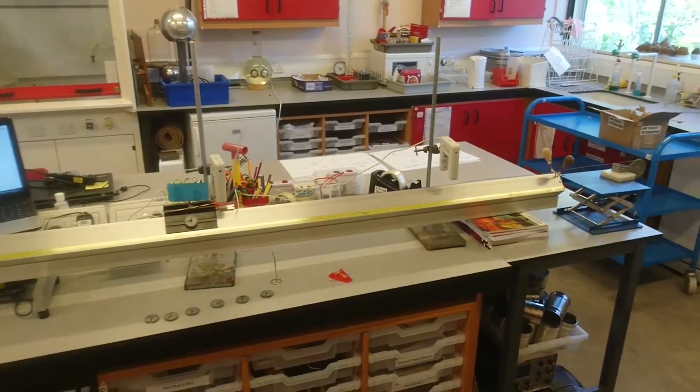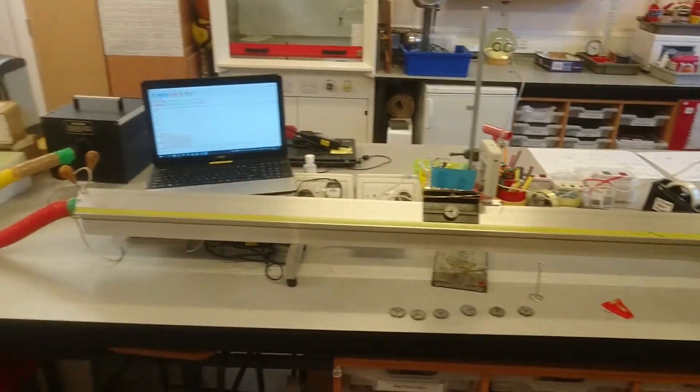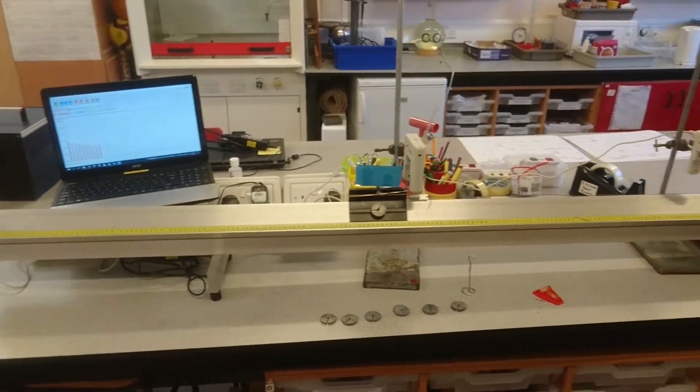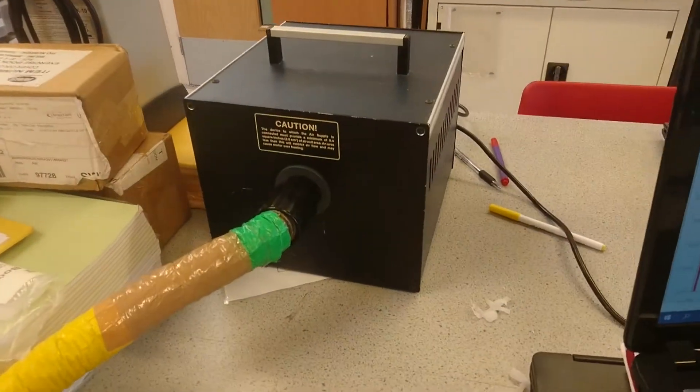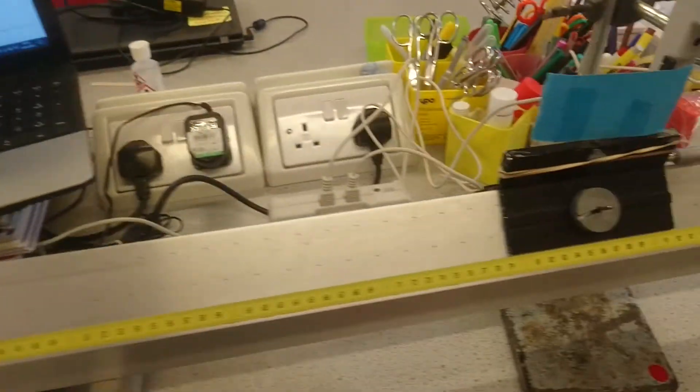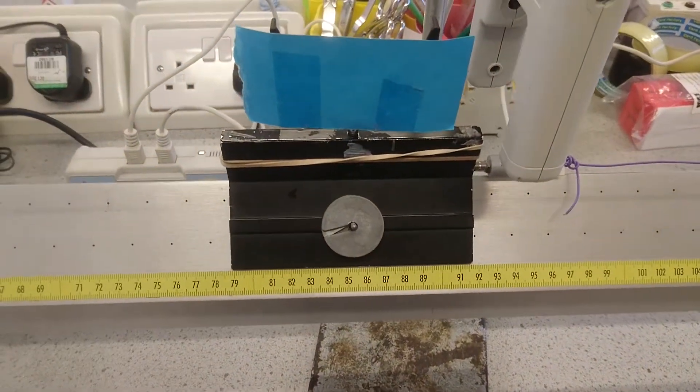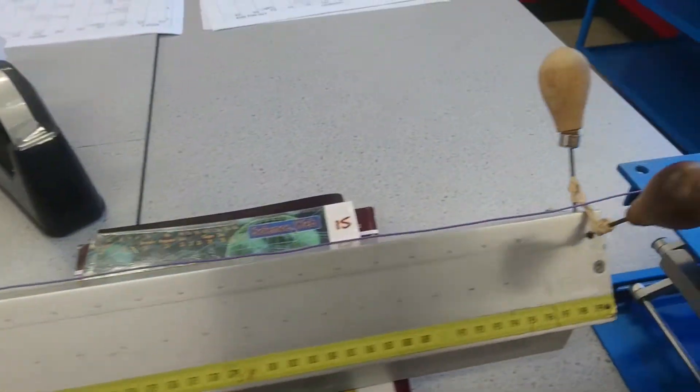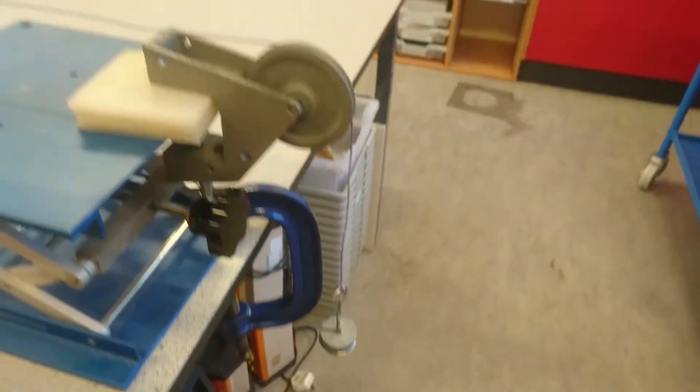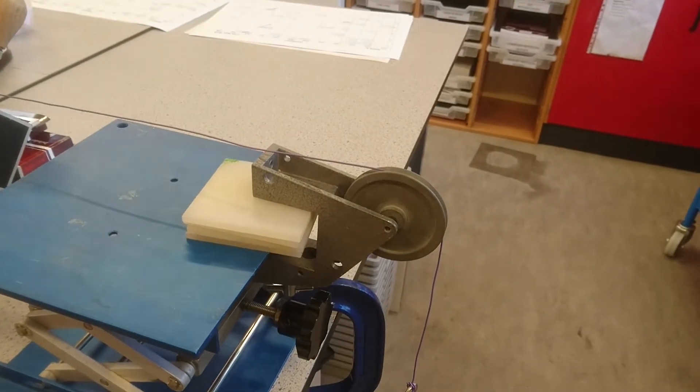I have a linear air tracker with light gates, a laptop, and a blower. This is the glider that goes along the track. The glider is attached to masses on a string that go over a pulley to reduce friction.